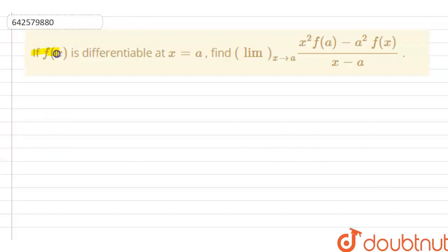The question is, if f(x) is differentiable at x equals a, find limit x tends to a of x squared f(a) minus a squared f(x) divided by x minus a.